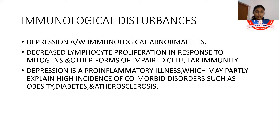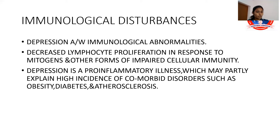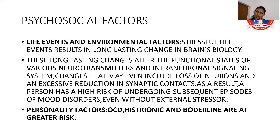Immunological disturbances associated with depression include decreased lymphocyte proliferation in response to mitogens and other forms of impaired cellular immunity. These lymphocytes produce neuromodulators such as CRF and cytokine peptides known as interleukins, which appear to be associated with clinical severity, hypercortisolism, and immune dysfunction. Cytokine interleukin-1 may induce gene activity for glucocorticoid synthesis. Depression is a pro-inflammatory illness, which may partly explain the high incidence of comorbid disorders such as obesity, diabetes, and atherosclerosis.